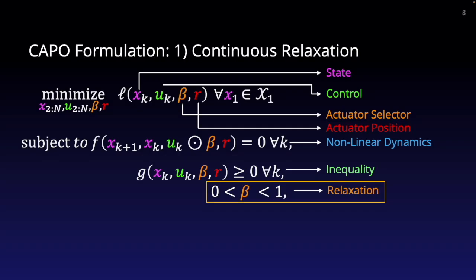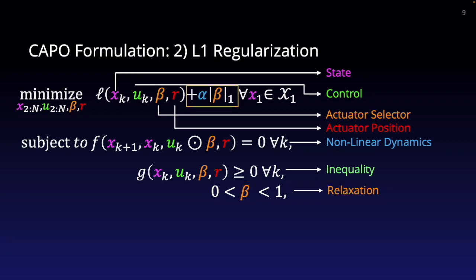The CAPO formulation makes the following changes. One, a continuous relaxation to transform the mixed-integer nonlinear program into a simpler nonlinear program. An L1 regularization term on beta for parsimonious configurations.